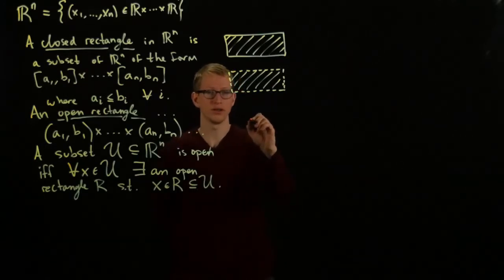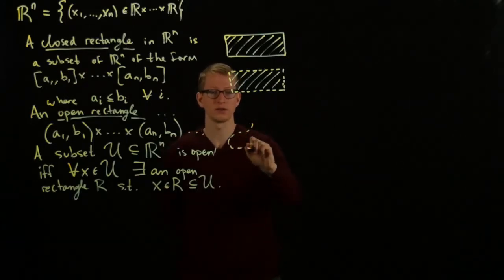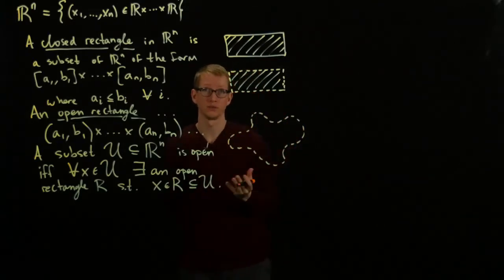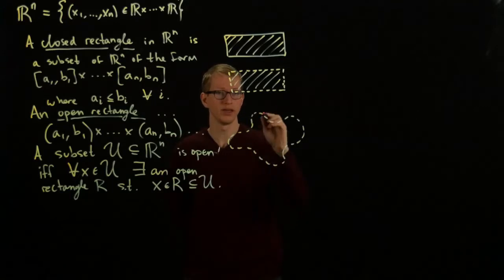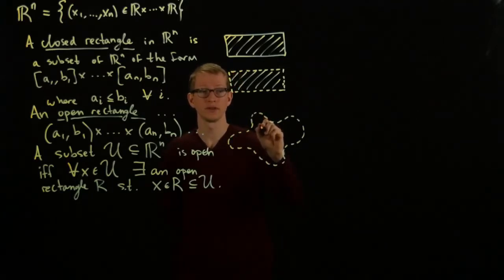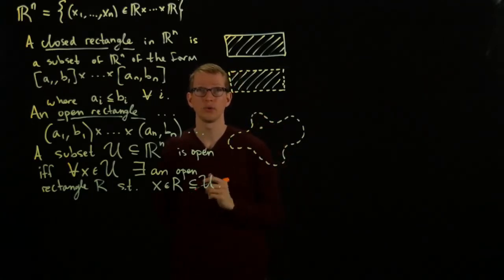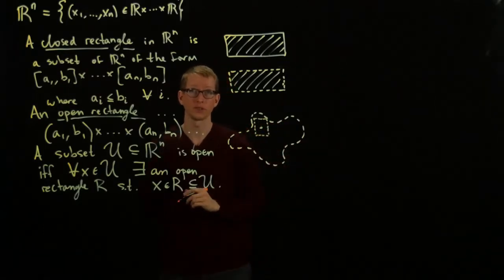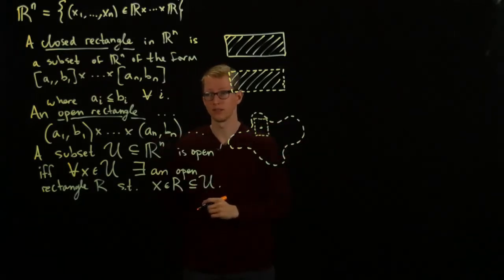So let me draw an example of such a thing. Here's a little blob. And I'm drawing a dash to remind myself that this thing is open. Pick a point here, for example, and I have to find a rectangle that fits inside that contains this point. And you can see that I can do something like that. And if I can do this for every single point, then that set is said to be open.